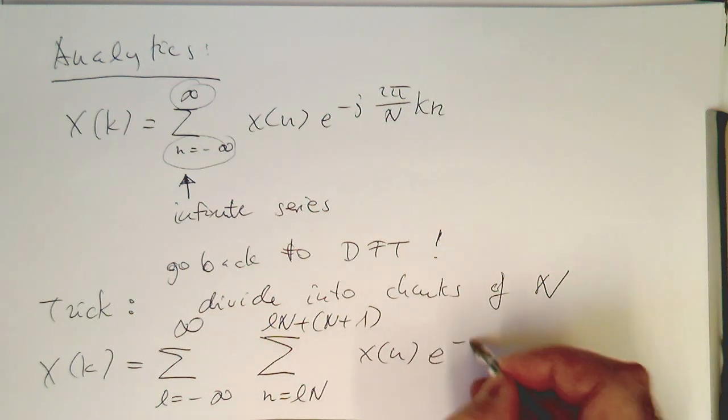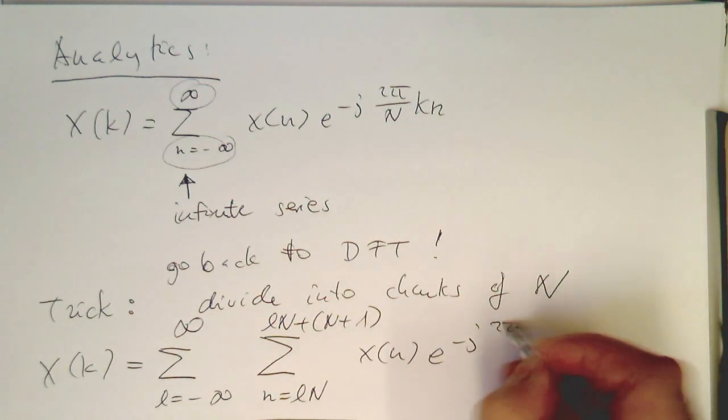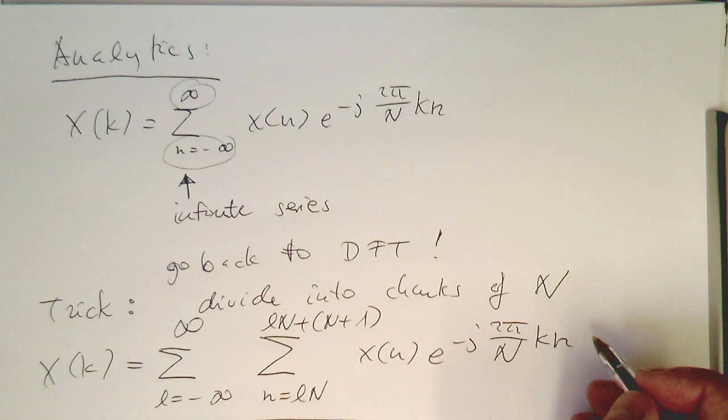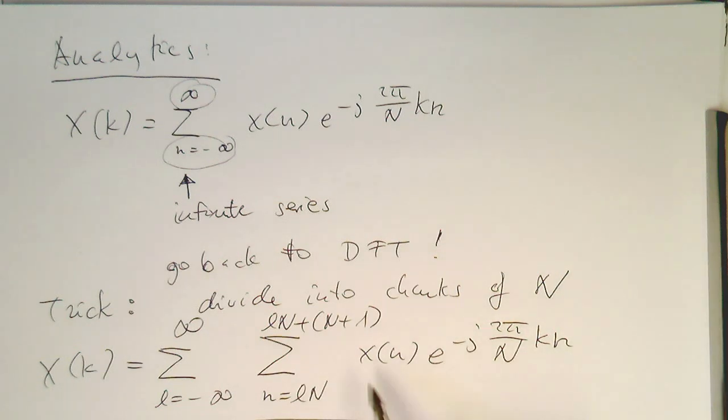And then we just write the same from above here again, e to the minus j 2 pi divided by n, k n. So we see already, we are slowly going towards our DFT. So the next step is just by moving again our ln here into the formula here, so that we are reaching basically our DFT here.